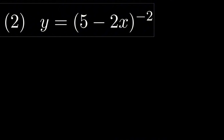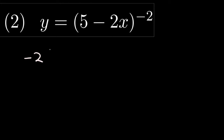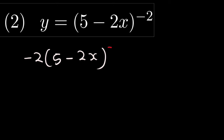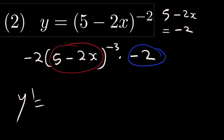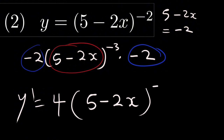For the next question, we use the power rule with power negative 2. We take negative 2 and multiply by the coefficient to get negative 2(5−2x), subtract 1 from the power to get negative 3, then multiply by the derivative of (5−2x), which is negative 2. Multiplying negative 2 by negative 2 gives positive 4, so the final answer is 4(5−2x) to the power negative 3.